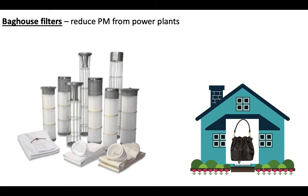A more straightforward answer is to just put a filter on your exhaust — these are called baghouse filters. They reduce particulate matter by trapping it in the filter. These are very high-quality filters, similar to the HEPA filters discussed during the coronavirus pandemic. You've also got filters in things like your vacuum, the hood above your stove, and your car. All of these help filter out particulate matter and can be used on an industrial scale in a coal power plant.